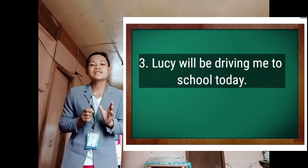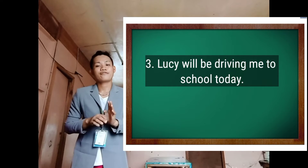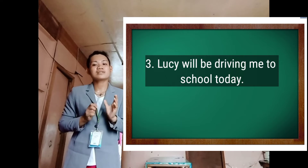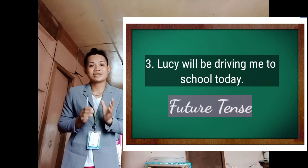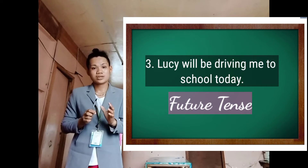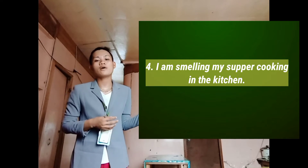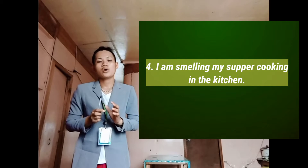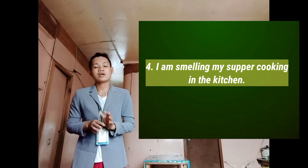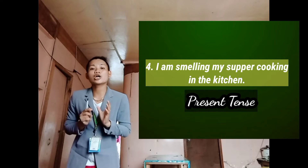Example number three: 'Lucy will be driving me to school today.' What kind of verb tense is this? Please stand up, Rooney. Very good. This sentence refers to the future tense again, because this is when an event has not taken place yet. Another one: 'I am smelling my supper cooking in the kitchen.' What kind of verb tense is this? Very good. This sentence refers to the present tense, because this is when an event is actually happening.